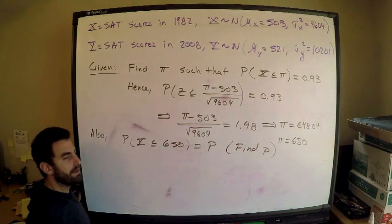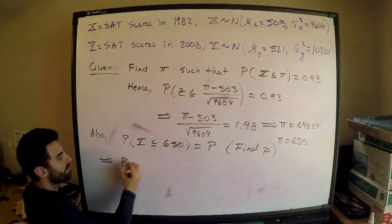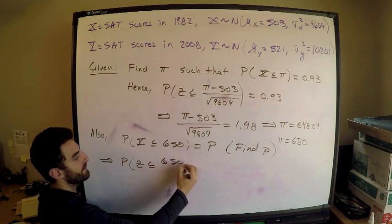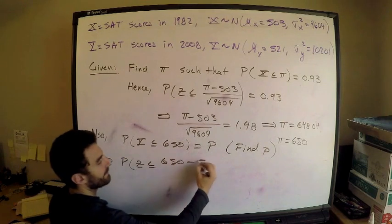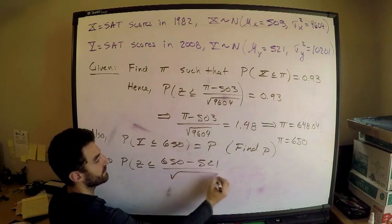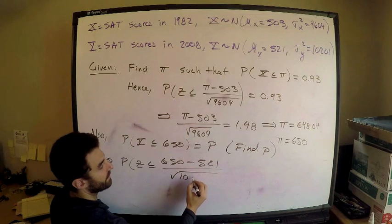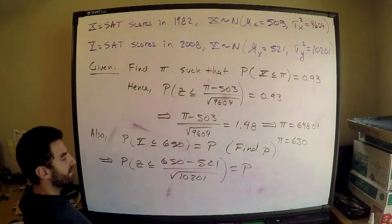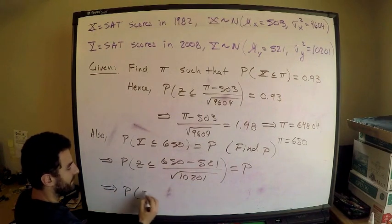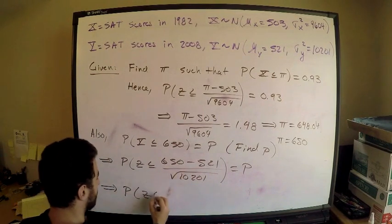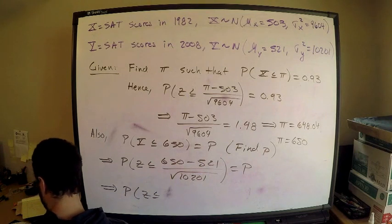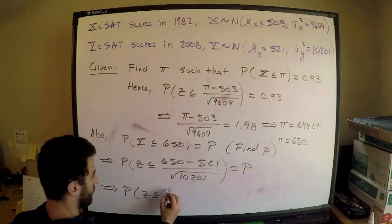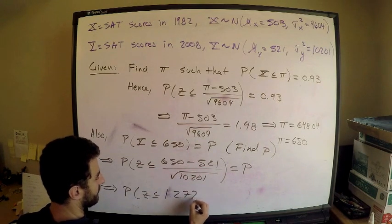Same thing. So this tells me the probability Z is less than or equal to 650 minus the mean, 521, divided by the square root of 10201, is equal to P. And this tells me that the probability Z—do this in the calculator—and what you should get there is, I believe I'm getting 1.2772, so 1.28.